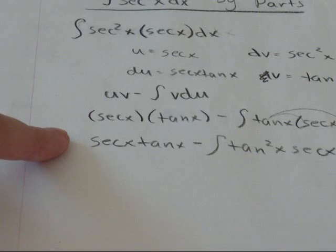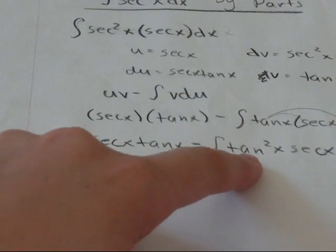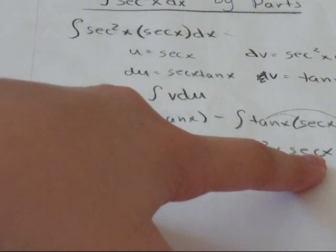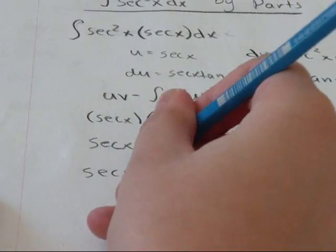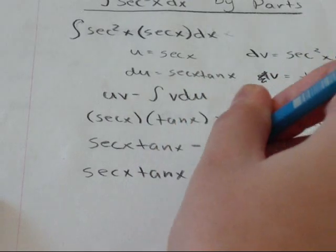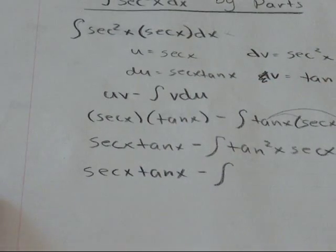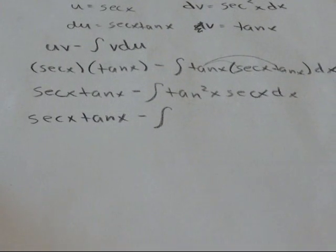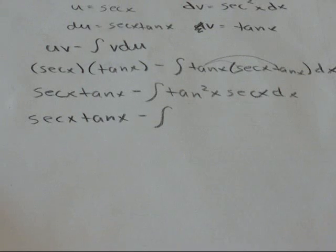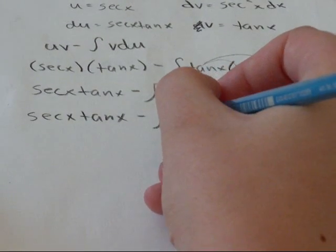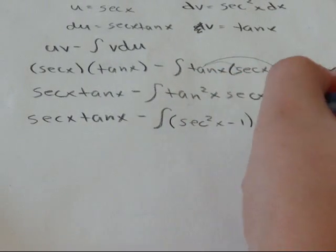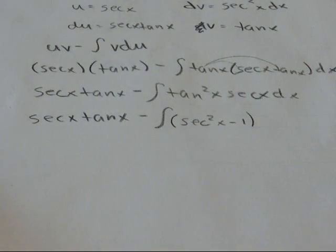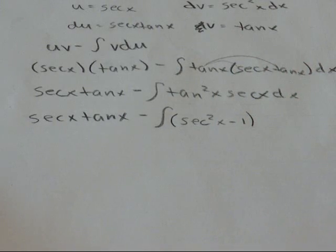The next thing I'm going to deal with is changing this tan squared x secant x dx into something I can integrate. So I'm going to bring along the secant x tan x minus the integral. I'm going to change this tan squared x using a trig identity into secant squared x minus 1. And that's the trig identity, tan squared x equals secant squared x minus 1.